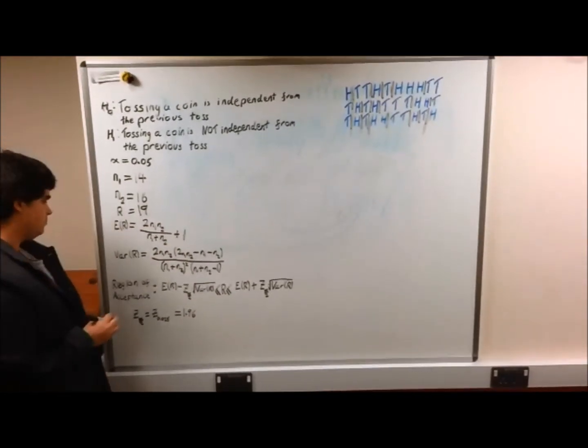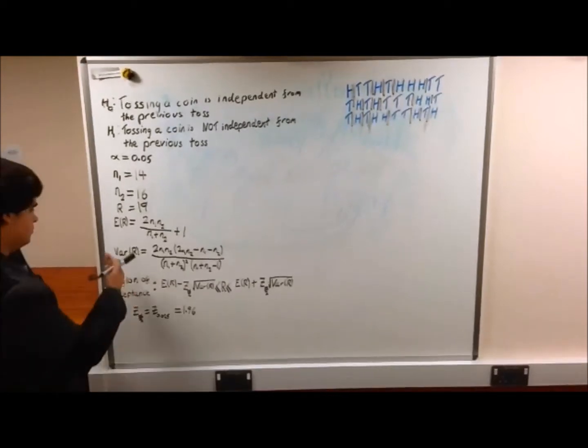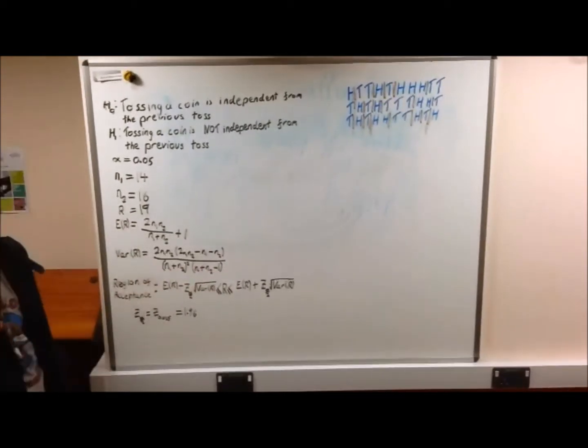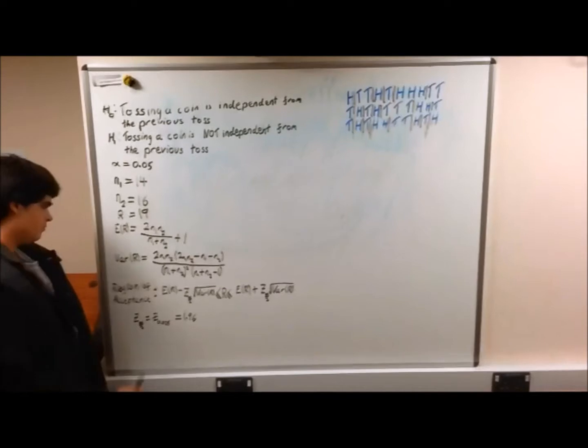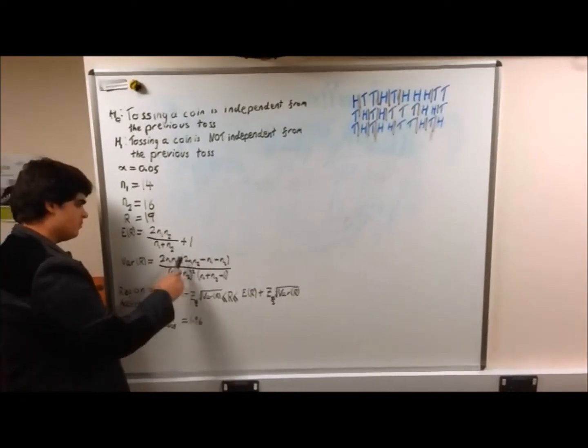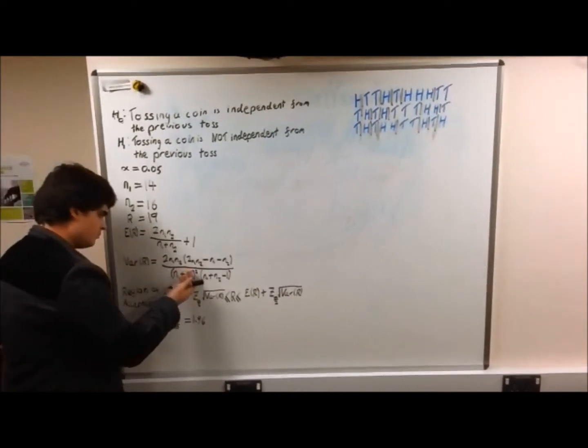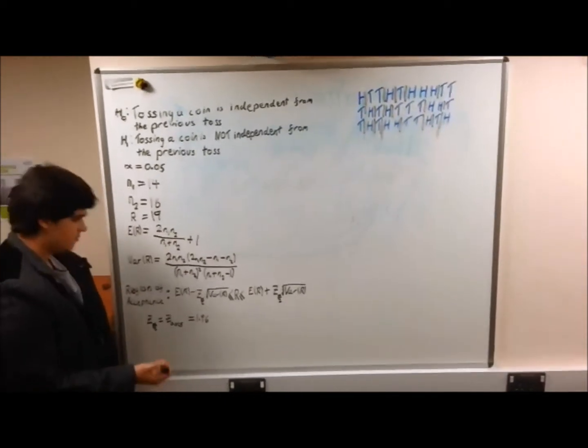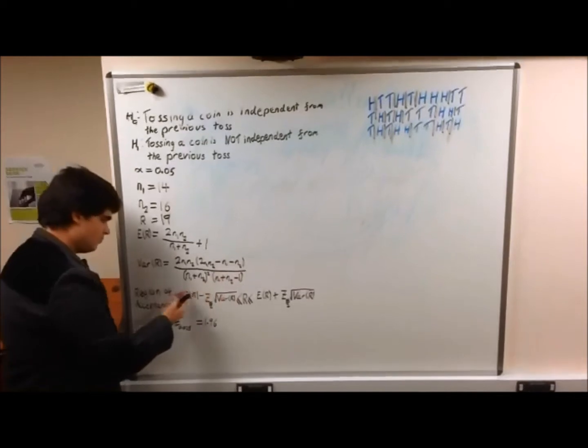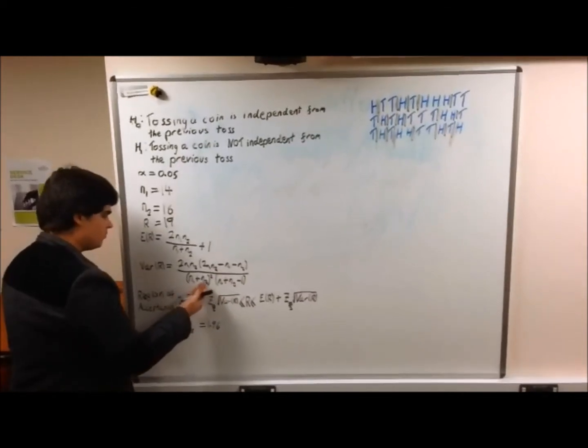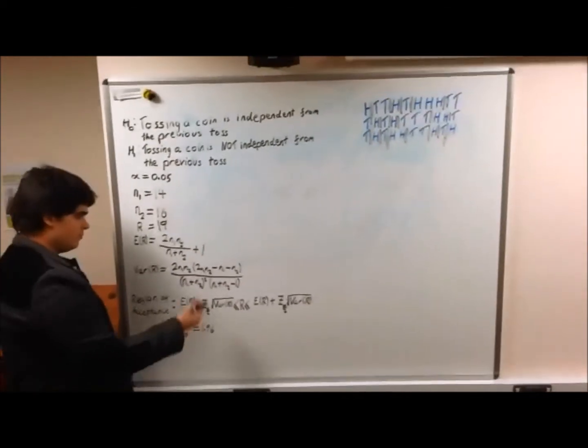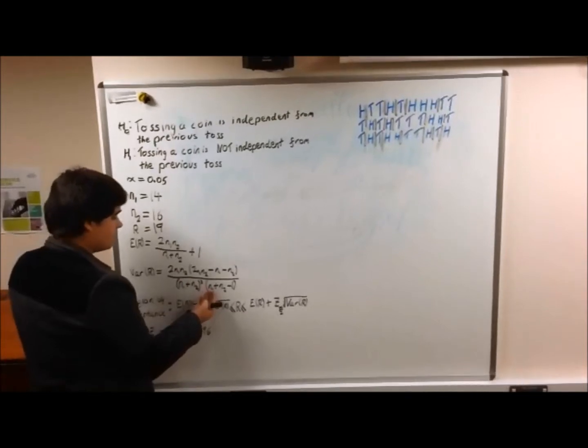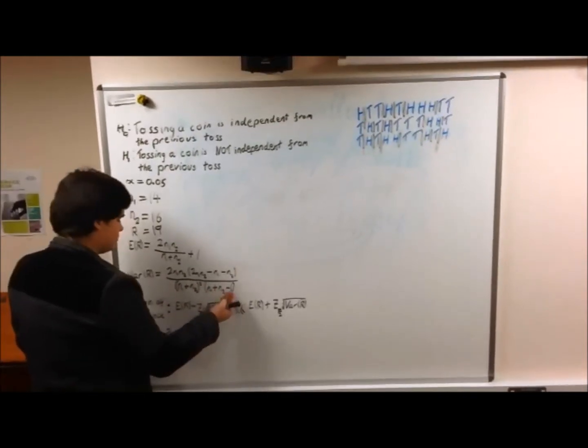The variance of R measures how far a set of numbers are spread out. So in this case, 2 times N1 times N2 open brackets, 2 times N1 times N2 minus N1 minus N2 close brackets, all over open brackets N1 plus N2 close brackets squared times open brackets N1 plus N2 minus 1 close brackets.